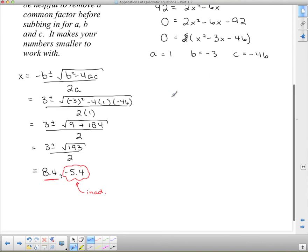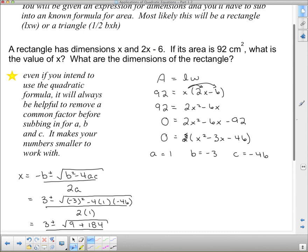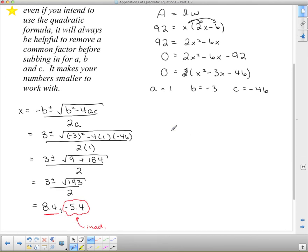So, what does that actually mean? Well, take a look back up. It says the 2 dimensions of the rectangle were x and 2x minus 6. So, x equals 8.4, what we found there. But we also need the other dimension, which is 2x minus 6. So, we have to do 2 times 8.4 minus 6. 2 times 8.4 minus 6 gives us 10.8.